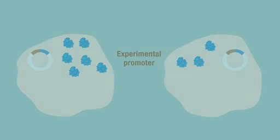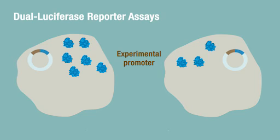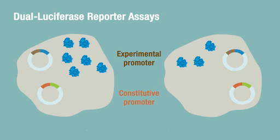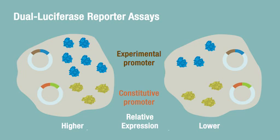How do you correct for variables in your reporter assay, like cell number and transfection efficiency? Dual luciferase reporter assays. For a dual luciferase assay, transfect with a control plasmid constitutively expressing a second luciferase. The ratio of experimental luciferase activity to control luciferase activity corrects for variables in your reporter assay.